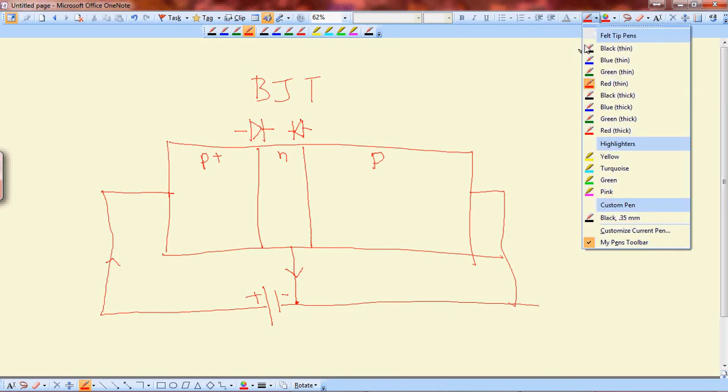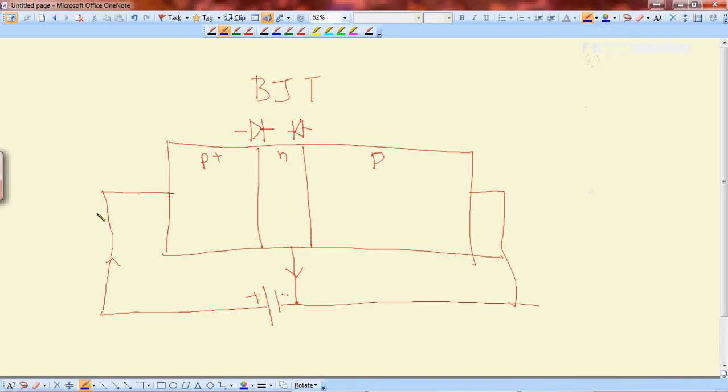Why? Let me show you why. First, we push holes into here. So we inject holes. Now once holes are injected, it will go through the P plus layer there and the P layer, creating current flows.